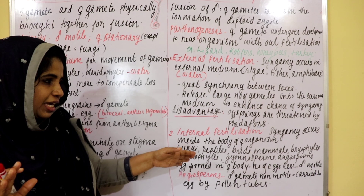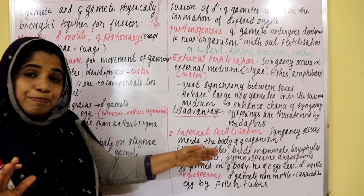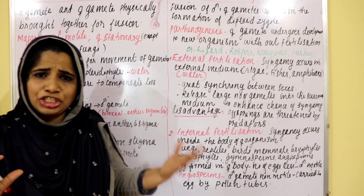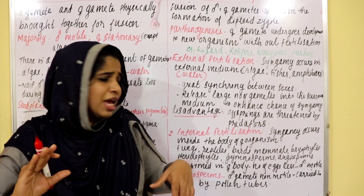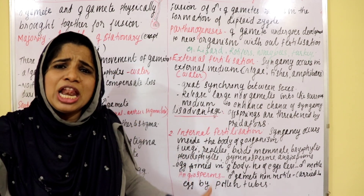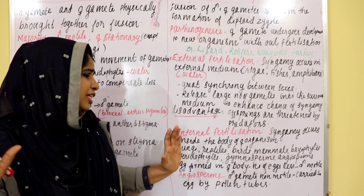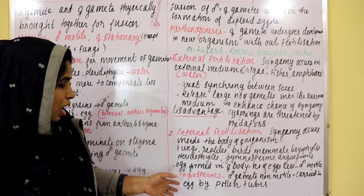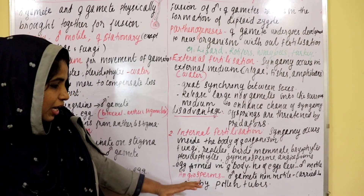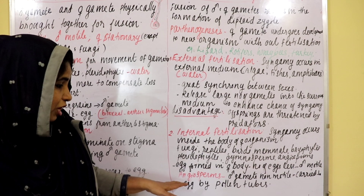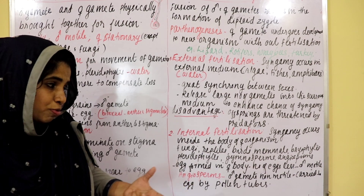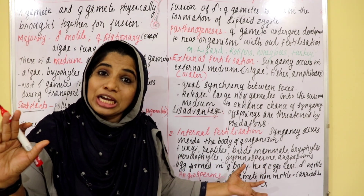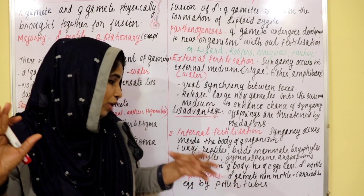Examples of organisms with internal fertilization include fungi, reptiles, birds, mammals, bryophytes, pteridophytes, and gymnosperms. In internal fertilization in angiosperms, the male gametes are non-motile.